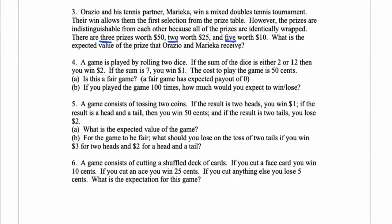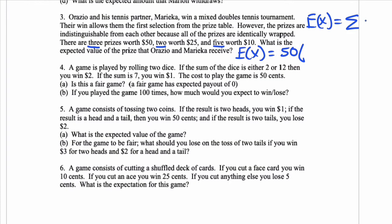There's three prizes worth 50, two worth 25, and five worth 10. What's the expected value that they get? So the expected value here is just like the other question, the amounts times the probability. Here's the formula. I'll just rewrite the formula. The expected value equals the sum of the amounts times the probability of that amount happening. That's what the sum, that's what the sign means. You add them all up.